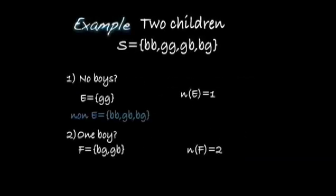Having 2 children has a sample space of 4 possible outcomes. The event of having no boys is labeled E with outcome GG — notice there are no boys. The complement of E is BB, GB, and BG — those outcomes are not in E but are still in the sample space. There are 3 outcomes, so 1 plus 3 equals 4, the total number of possible outcomes.